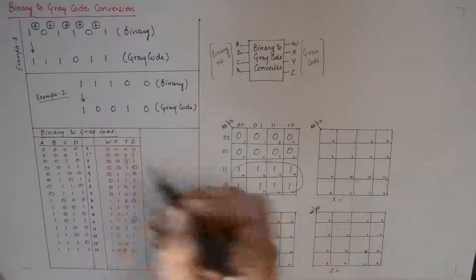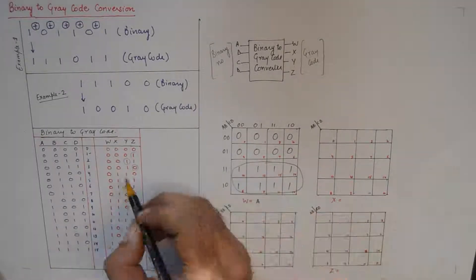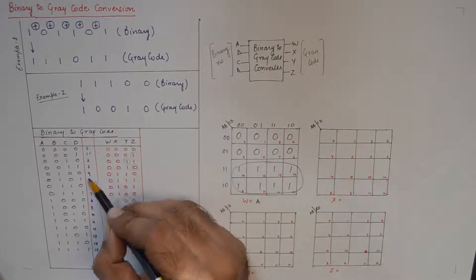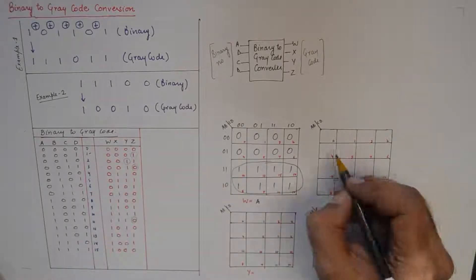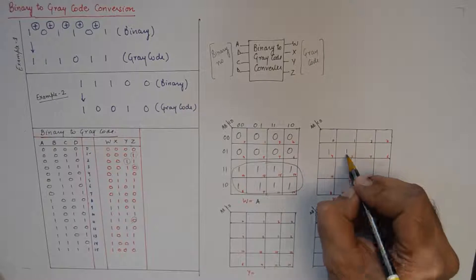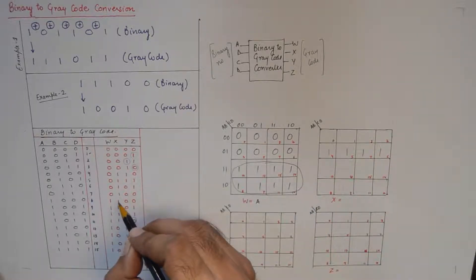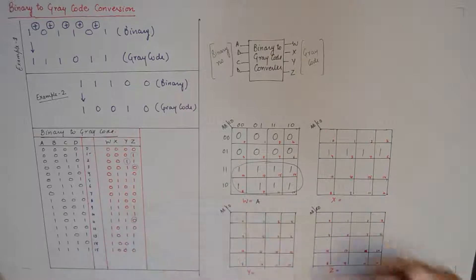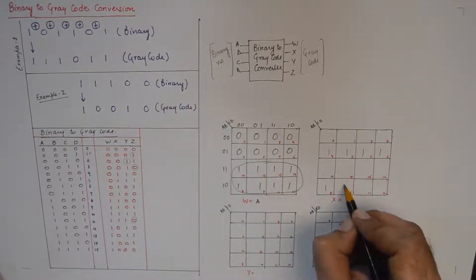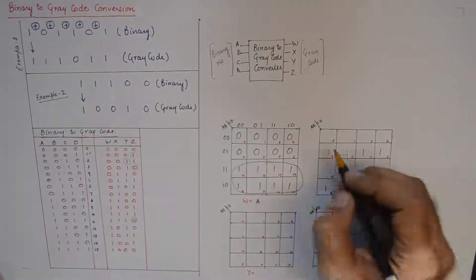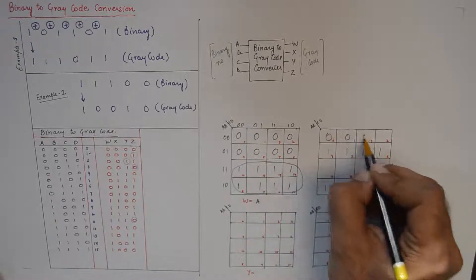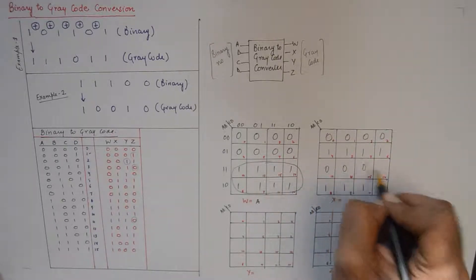So this is 4, 5, 6, and 7, and then x is also 1 for 8, 9, 10, 11 - so 8, 9, 10, and 11 - and it is 0 for the rest of the inputs.